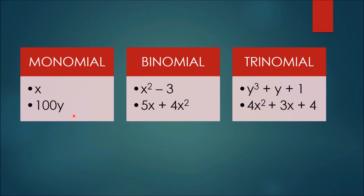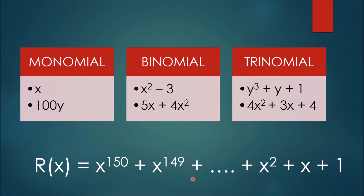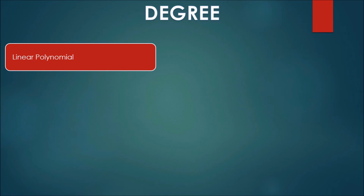Now look at this expression — the term with the highest power of x is 4x squared, and the exponent of x for this term is 2. We call the highest power of the variable in a polynomial the degree of the polynomial. So the degree of this polynomial is 2. For other polynomials shown, the degree is 3, 2, and 1 respectively. A polynomial can have any finite number of terms — this expression has 151 terms and the degree of this polynomial is 150.